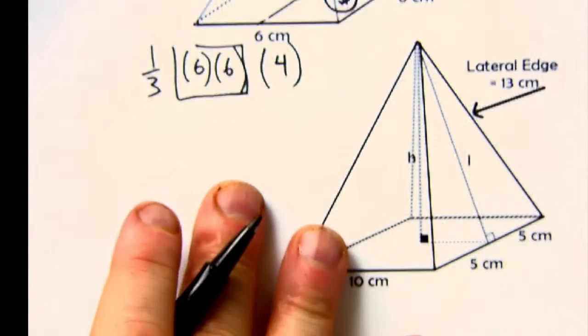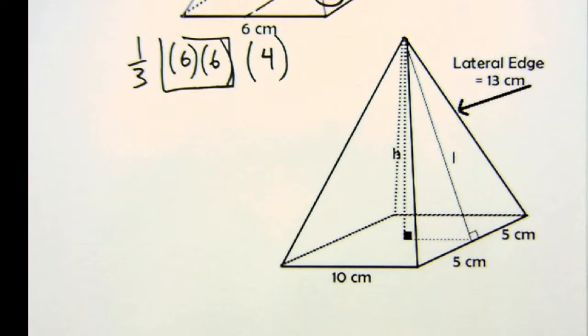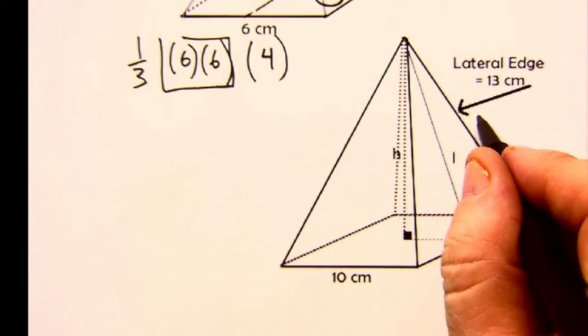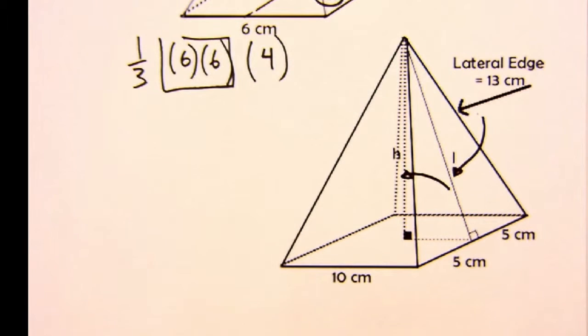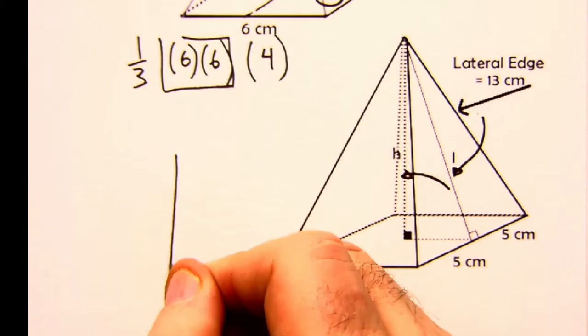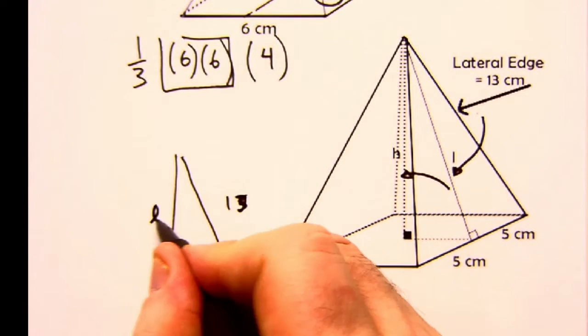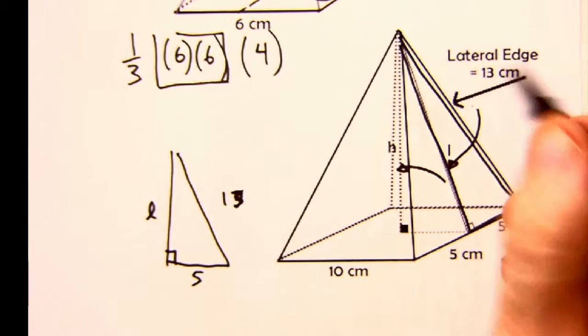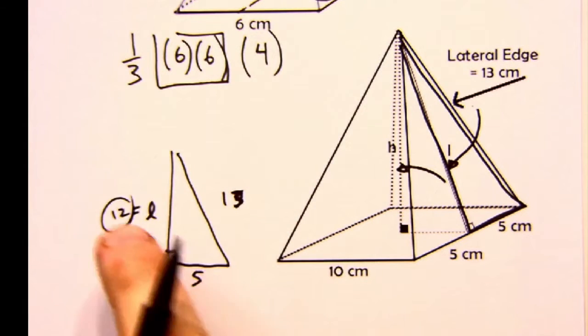If I was calculating this: one-third the area of the base, which is six times six, times the height, which is now four. Now if they give you a lateral edge, things get more interesting. You've got to go lateral edge to find the slant height, and then use the slant height to find the actual height. Let me draw these out in pieces. The lateral edge is thirteen. This would be L—you see that triangle there, looking out to that corner, out to that lateral edge. Again, hopefully you can see my friend the Pythagorean triple: five-twelve-thirteen.